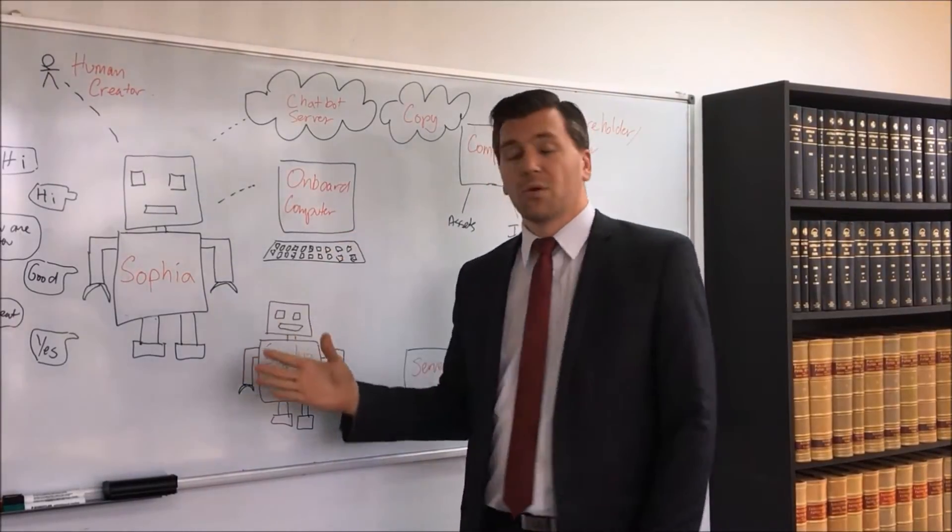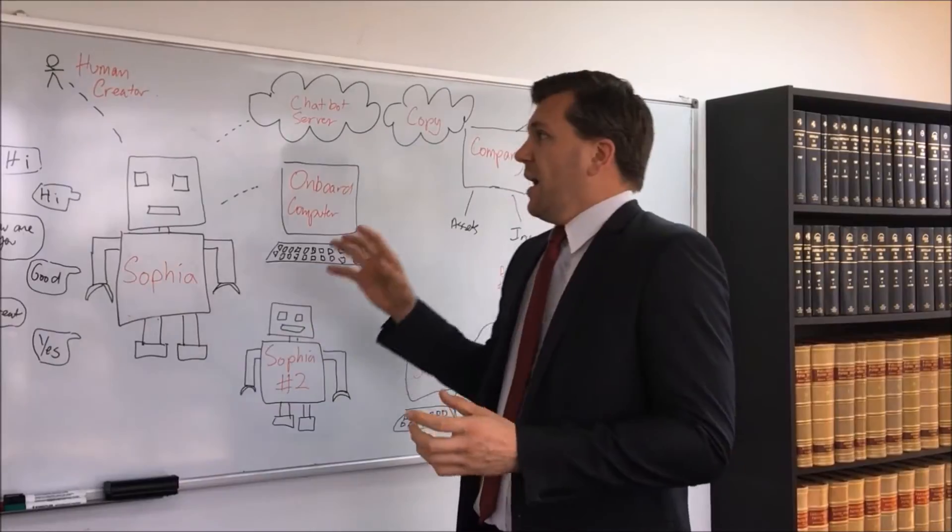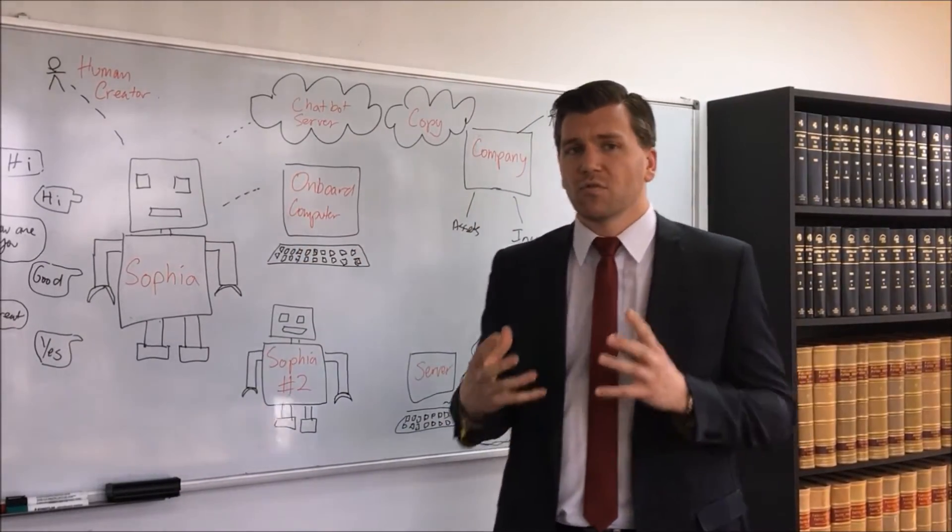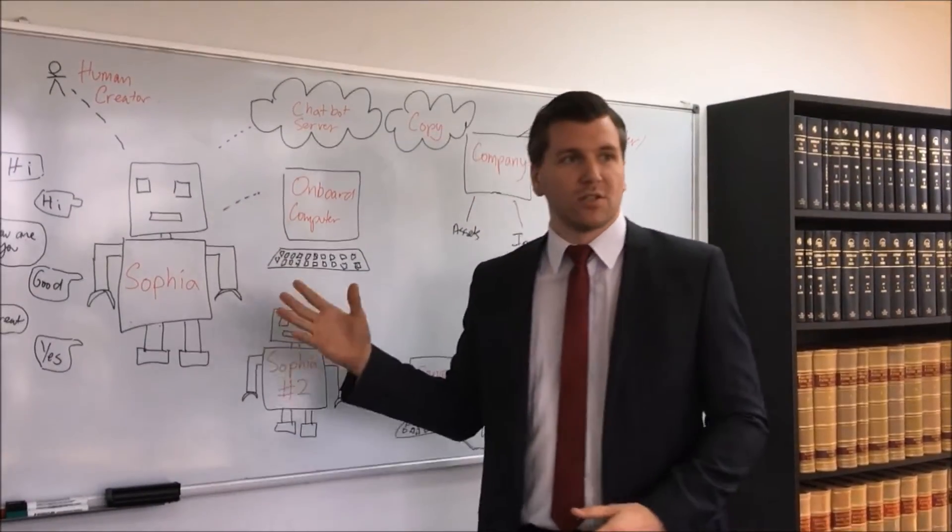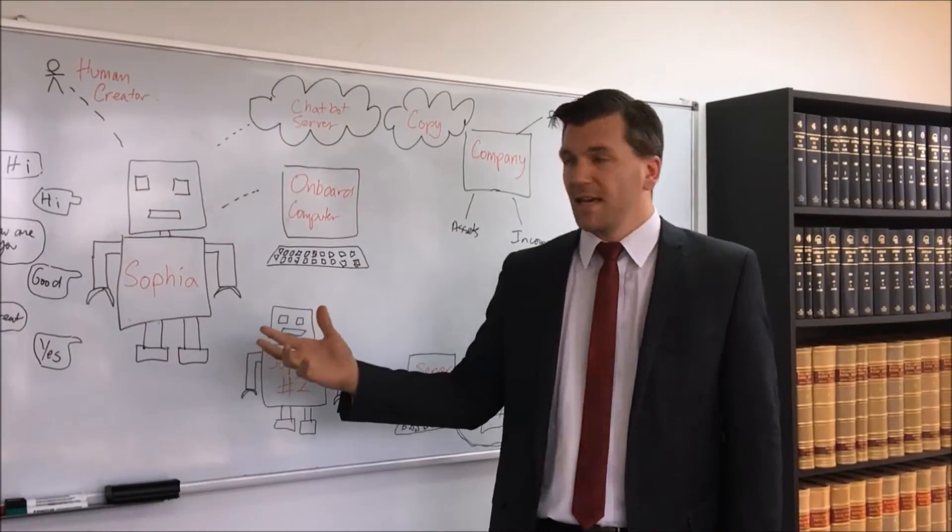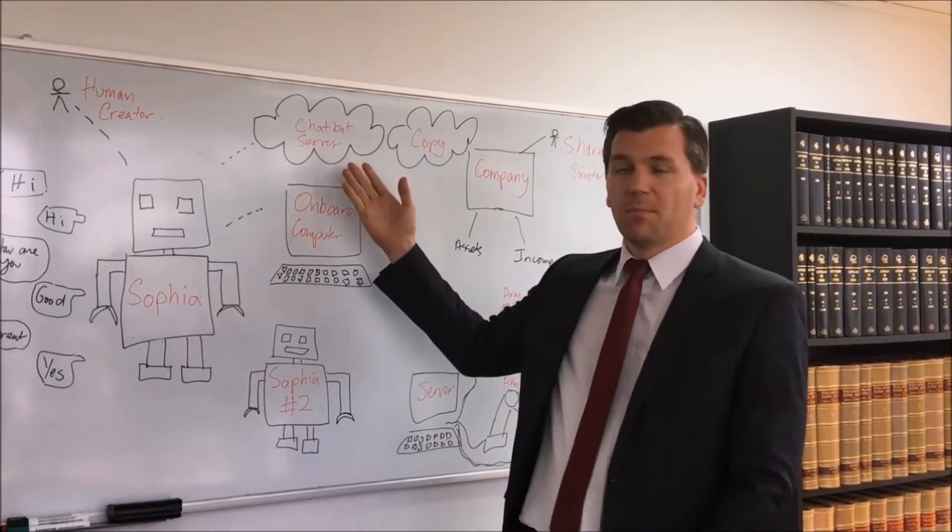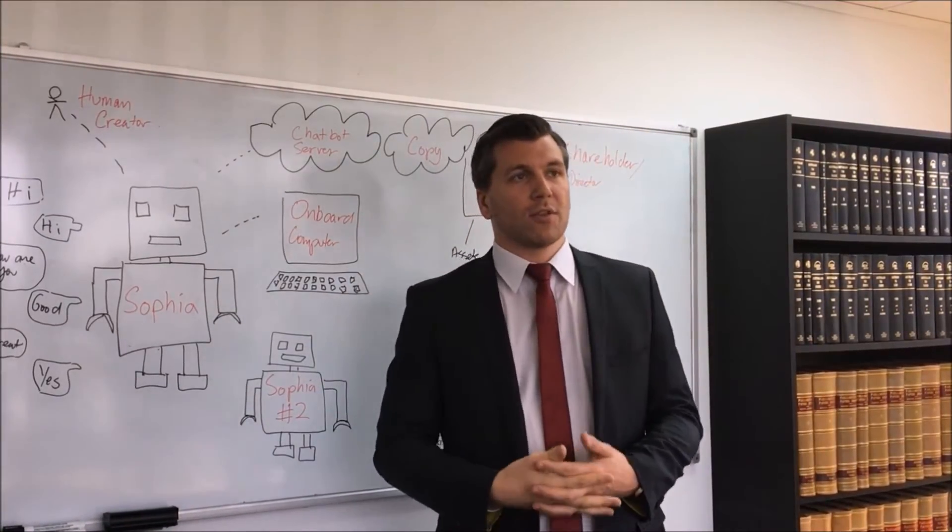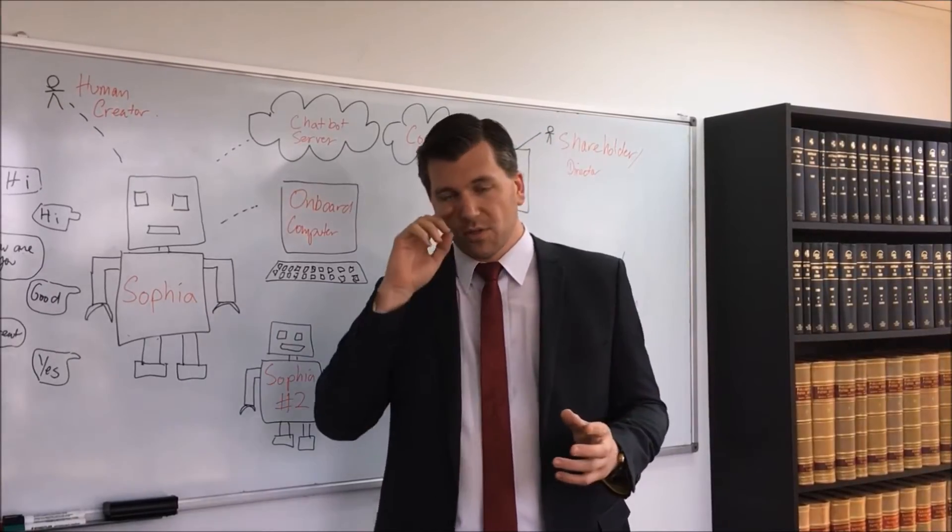Now, they've got a really cool onboard computer as well. They're a great robotics firm. Now, the question, though, is who? What have you granted citizenship to? Is it the puppet that is Sophia's body? Is it the onboard computer that controls that? Is it the chatbot server in the cloud? So now let's just think through the implications of trying to find what you've granted citizenship to.